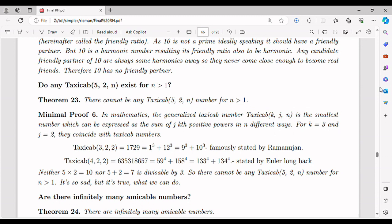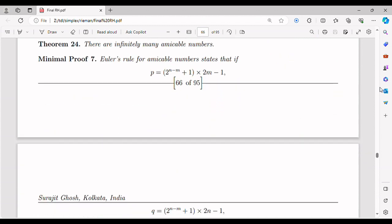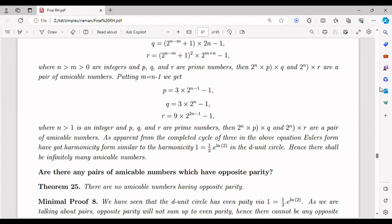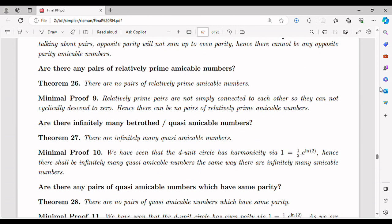Imaginary numbers being brought down to the real number line would impact the mathematical framework of the wave function. Complex numbers play a crucial role in representing the amplitude and phase of quantum states. By extending the real number line, it could introduce new mathematical techniques to describe and analyze quantum systems more comprehensively.